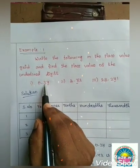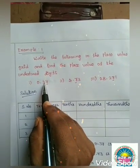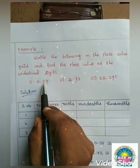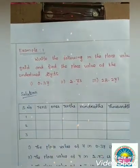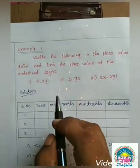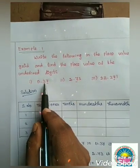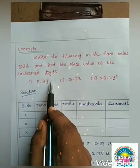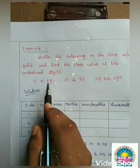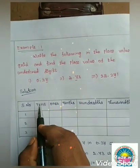So in the place value grid, write: ones, tens, hundreds on the left side; tenths, hundredths, thousandths on the right side. Right side of the point starts with tenths. So for 0.37, listen carefully.